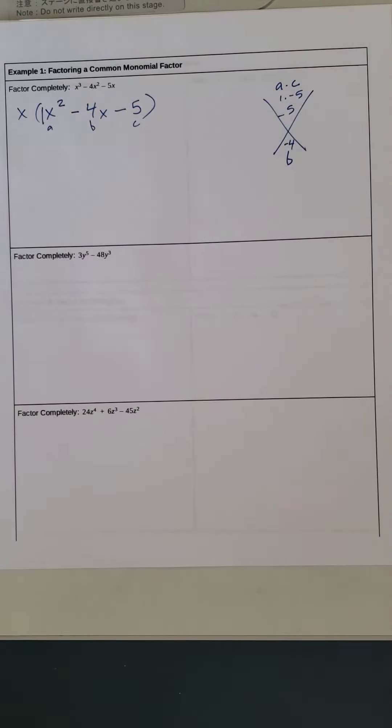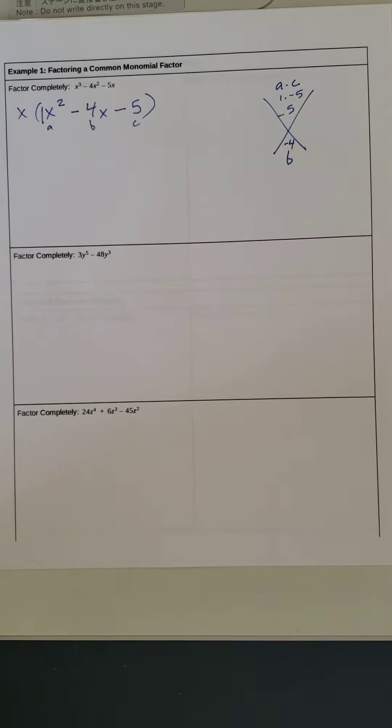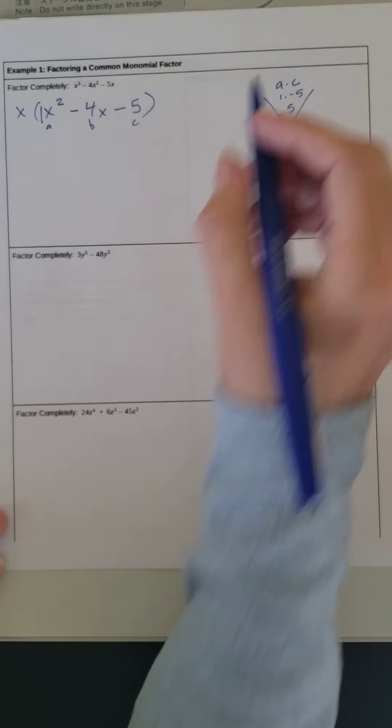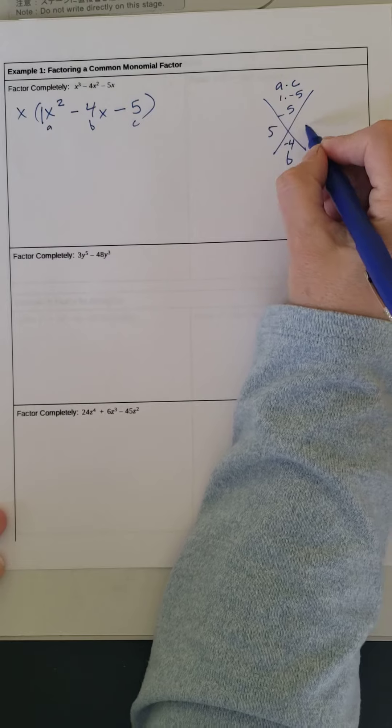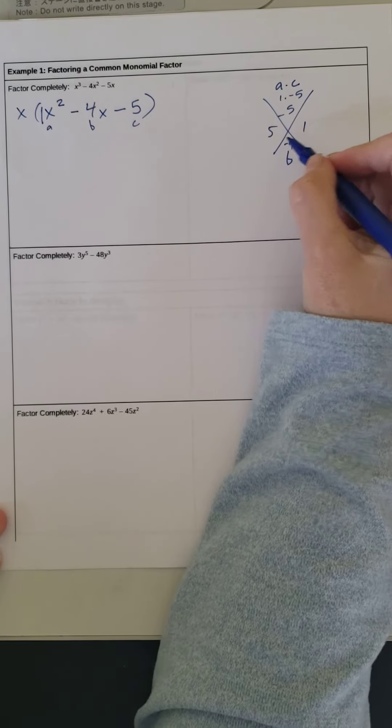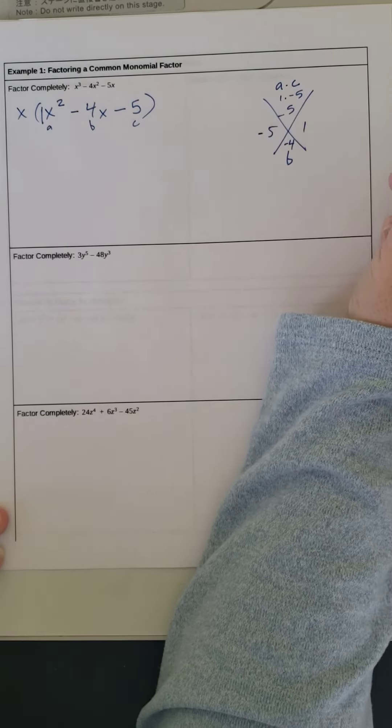So we need factors of negative 5 that equal negative 4. Factors of negative 5, that would be 5 and 1. We need it to total negative 4, so that means we need to put a negative 5 here.